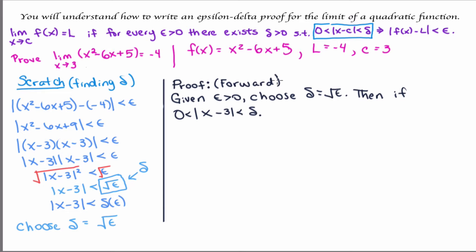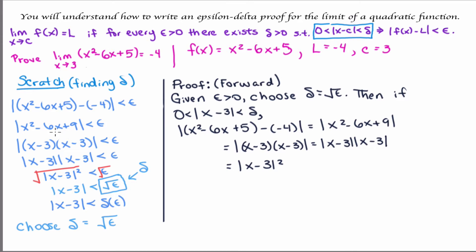I'm calling this a forward proof because from this point on I plan to go in the forward direction through my scratch work. I'll begin with the absolute value of f(x) minus l and somehow end up with that being less than epsilon. Moving in the forward direction through my scratch work, notice how the proof follows — where the absolute value of x minus 3 is squared. I use the fact that the absolute value of x minus 3 is less than delta. Then the absolute value of x minus 3 all squared would be less than delta all squared. We definitely need this less than symbol in our proof because we're trying to prove that the absolute value of f(x) minus l is less than epsilon. This is the key — this is why we went through the scratch work.